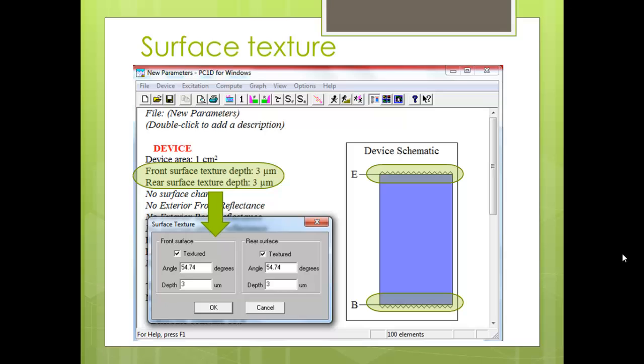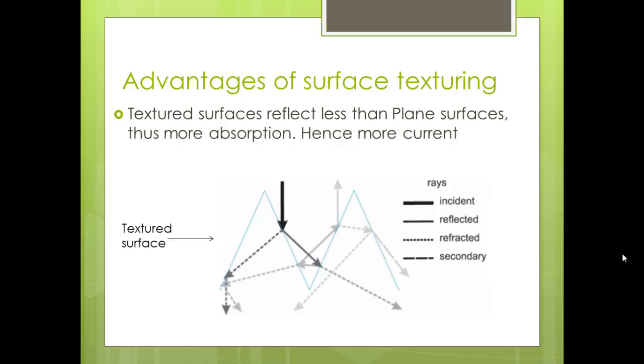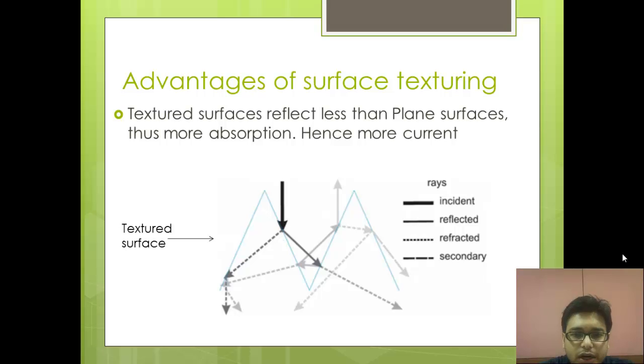This surface texturing is characterized by two parameters. One is the angle and the other is the depth. The depth is basically the height of the texture which you want. It is basically how much texturing you need. And the angle of this tilted blue line which you can see in the screen. And this angle is with the horizontal, with the plain surface.